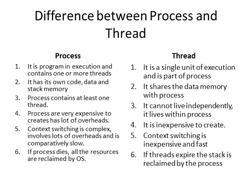A process is a program in execution and it can contain one or more threads. A thread is a single unit of execution and is part of a process — it comes within the process. Regarding memory, a process has its own code, data, and stack memory, whereas a thread has its own code and stack memory but must share the data memory and heap memory with the process.